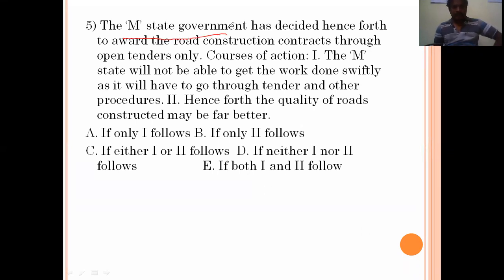The M state government has decided henceforth to award the road construction contracts through open tenders only. Courses of action: The M state will not be able to get the work done swiftly as it will have to go through tender and other procedures. Henceforth, the quality of roads constructed may be far better. Any state government would think that the tender would come with less amount and compulsory complete quality of work. That means both are correct. Both one and two work. Option D is the right answer.